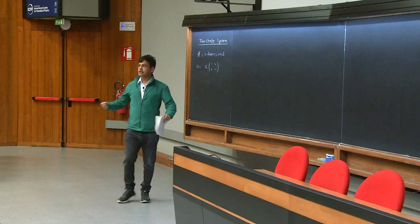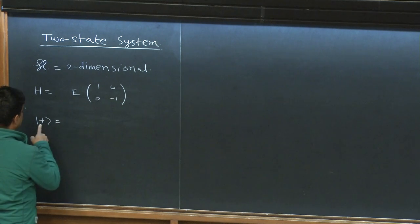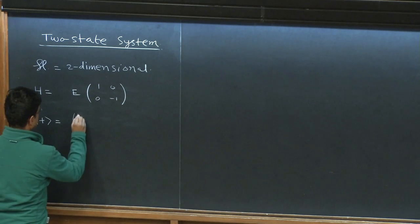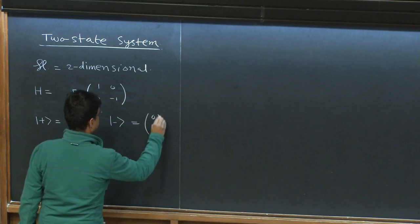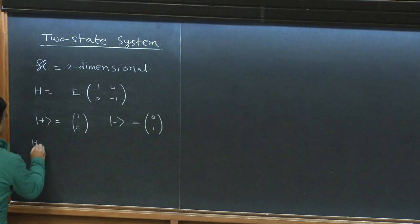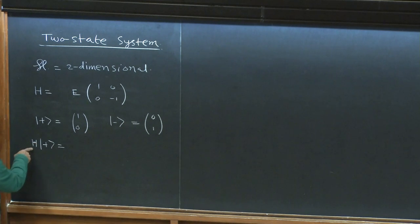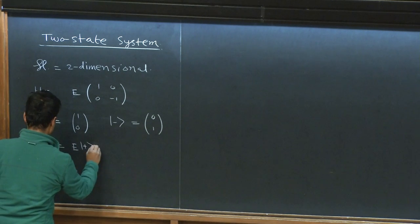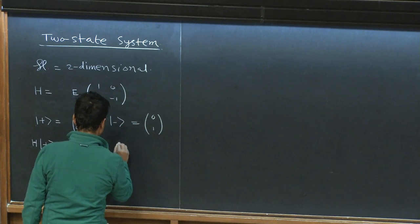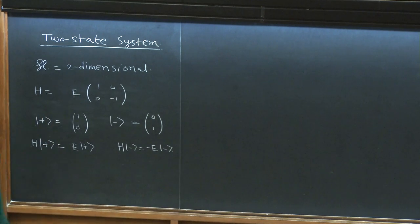All the discussions we had about quantum mechanics can now be stated very explicitly. I can define the state |+⟩ which is just (1,0) and state |−⟩ which is (0,1). The state |+⟩ has eigenvalue +E of the Hamiltonian — if you make a measurement of the Hamiltonian, you get answer +E — and similarly if you measure |−⟩ you get −E. It's an extremely simple quantum mechanical system.